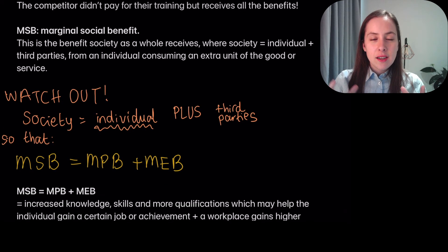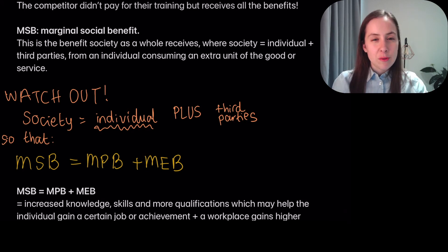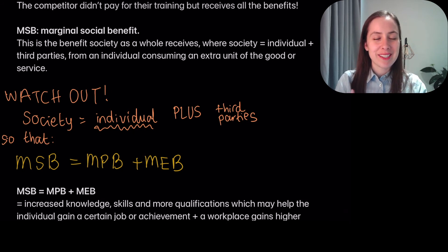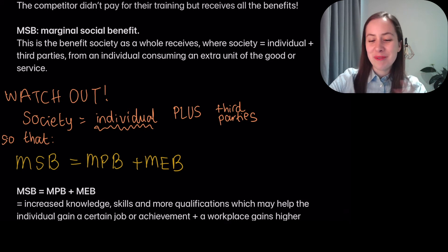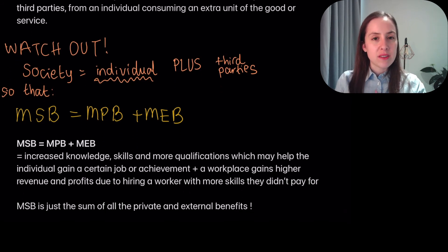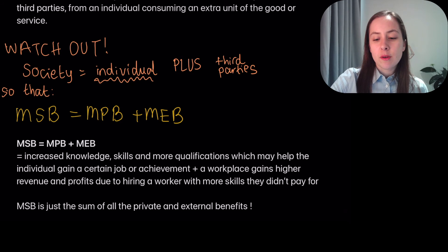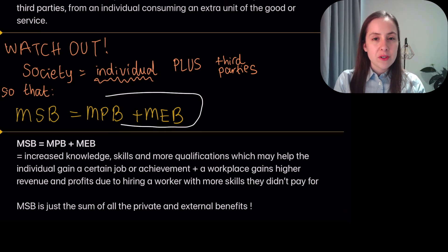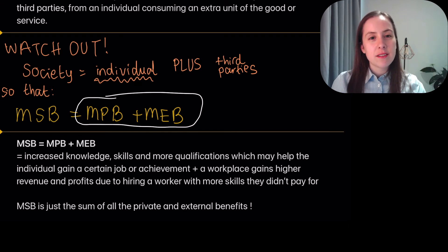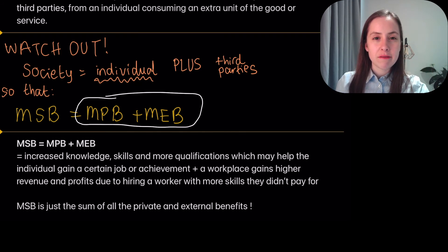MSB — this one's a tricky one — is the benefit to society as a whole from an individual consuming an extra unit of the good or service. Watch out: when it says 'society,' it means the individual plus the third parties. So: society equals individual plus third parties. This gives us the equation — Marginal Social Benefit equals Marginal Private Benefit plus Marginal External Benefit.